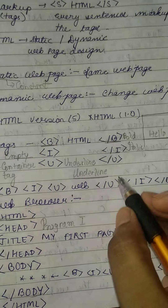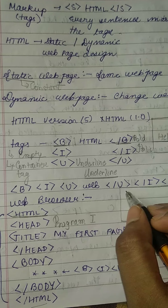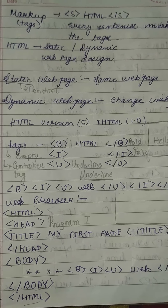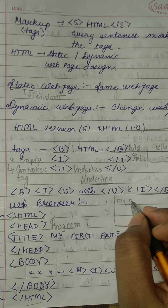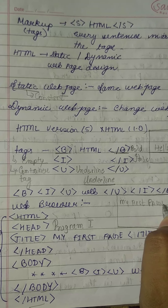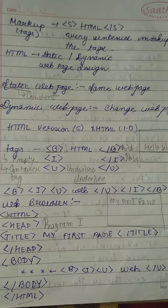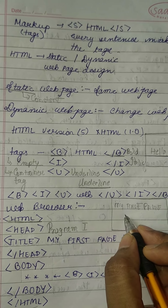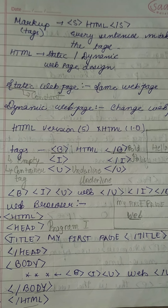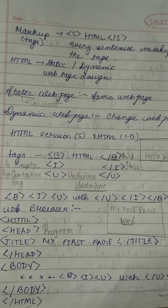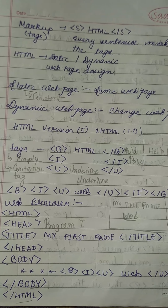I will show you the output drawing here, and also bring the actual output on the laptop in another video — otherwise this video will become too long and I don't want your data to get wasted. The output will show 'My First Page' as the page title, and 'Web' will appear bold, italic, and underlined. Do share this video if you find it useful, and suggestions are very welcome. Thank you, students.